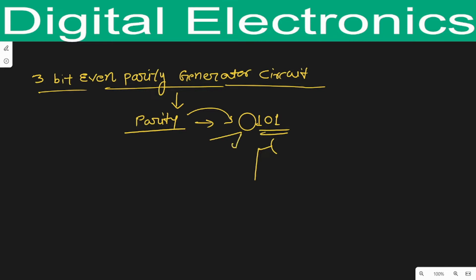This parity bit is of two types: the first one is even and the second one is odd. In this lecture we will discuss about a three-bit even parity generator. The parity generator is a circuit that is responsible for generating this extra even parity bit.